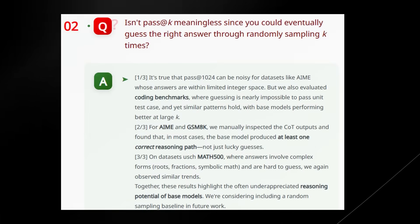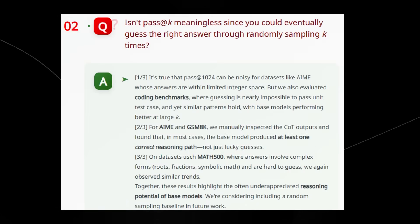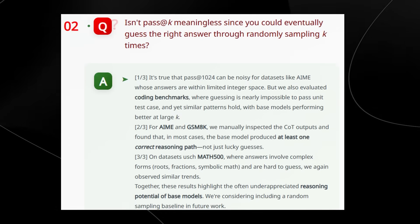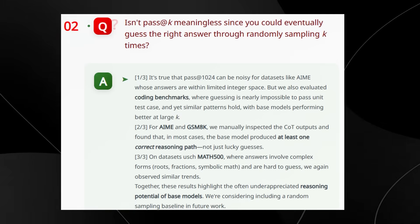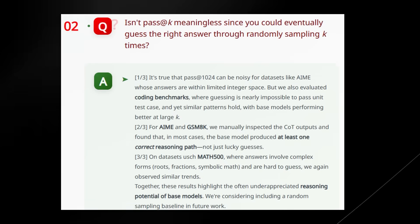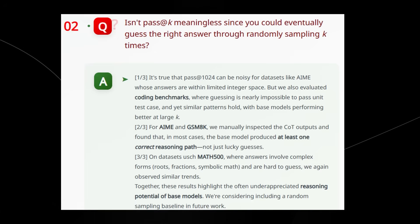There's another thing that they state: Isn't pass at k meaningless since you could eventually guess the right answer if you guessed enough times? They do make kind of a point. If the answer is just a number like 42 and the model guesses a thousand times, eventually it might hit it by luck. That could make pass at 1034 seem a little noisy on some math problems.